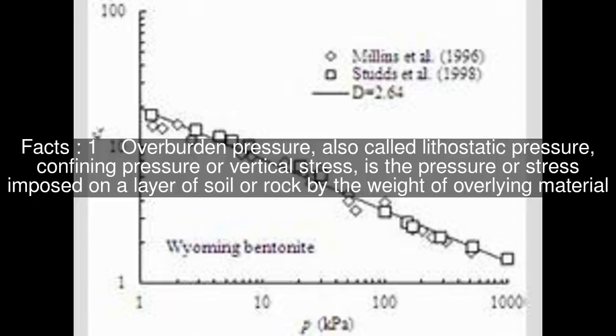Overburden pressure, also called lithostatic pressure, confining pressure, or vertical stress, is the pressure or stress imposed on a layer of soil or rock by the weight of overlying material.